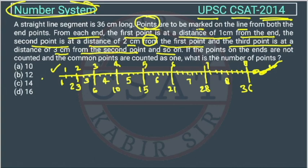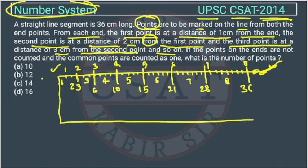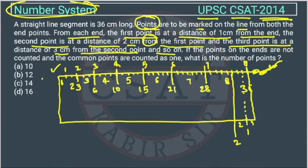Now we do the same from the other end of the line. The first point from this end is at 1 centimeter. The second point is at distance 2 from the first. The third point is at distance 3 from the second.